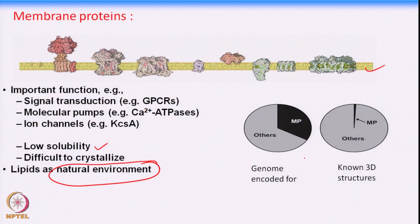If you look at the genome, it encodes almost 30 percent of proteins as membrane proteins, but the number of known structures is very limited. Although membrane proteins are important targets for the pharma industry, structurally we have very limited knowledge compared to soluble proteins. So if you want to quickly identify drug candidates without going through the structure-solving process - which takes years - you can use the techniques we have been discussing to quickly identify binding ligands.